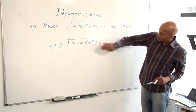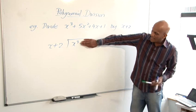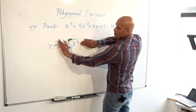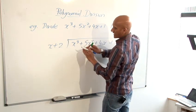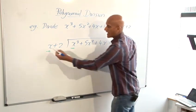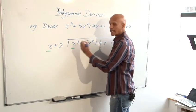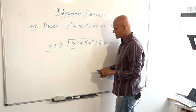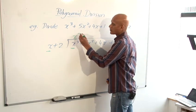Now what I'm going to do first of all is ignore all of these and I'm going to ignore that and I'm just looking at that x and that x cubed. So I'm just looking at these two and I'm asking myself, what do I have to multiply x by to get x cubed? And the answer of course is x squared. So I put x squared on the top there.